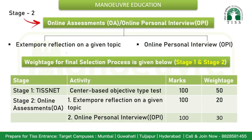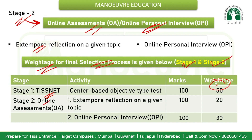Stage two consists of online assessment and online personal interview. The online assessment includes an extempore, which is a reflection on a given topic — panel members will give a topic relevant to the program of study and you'll be asked to present a reflection for a maximum of two to three minutes. In the personal interview, panel members interact with the candidate to understand motivation, interest, preparedness, and basic subject knowledge from undergraduate studies. Weightage for final selection: Stage 1 (TISSNET) — 50%, Stage 2 online assessment extempore — 20%, and online personal interview — 30%.